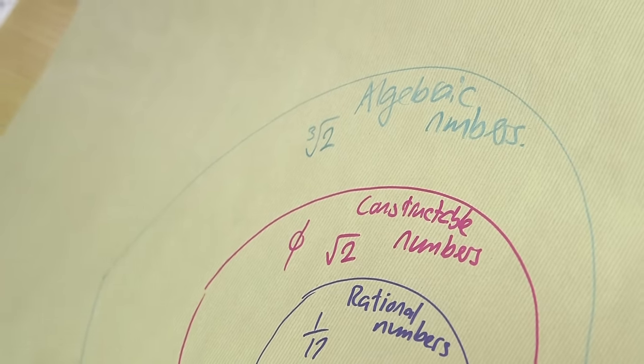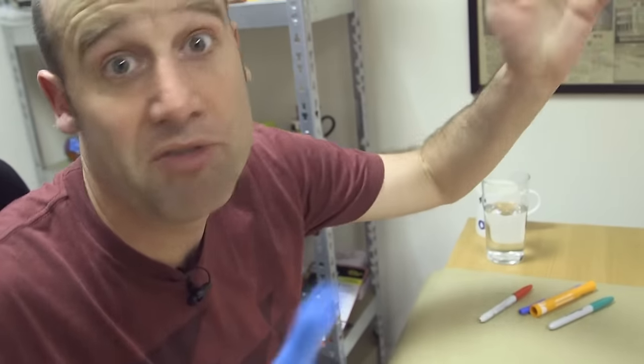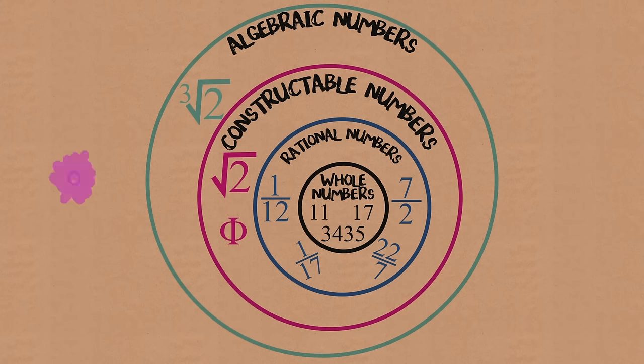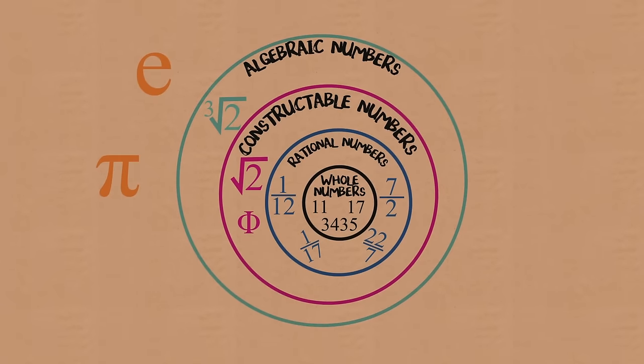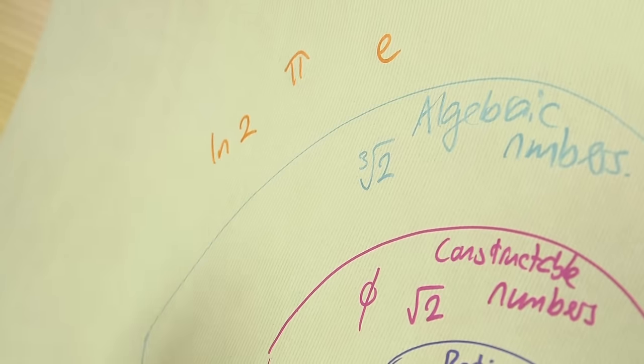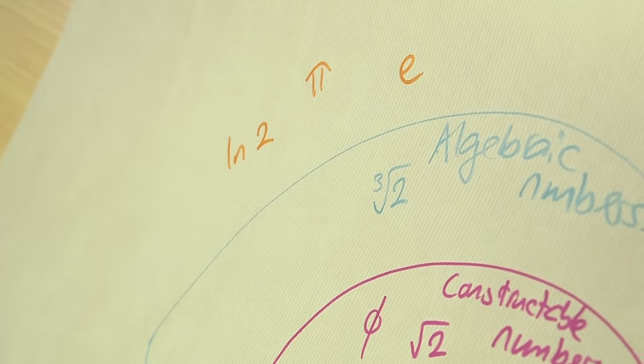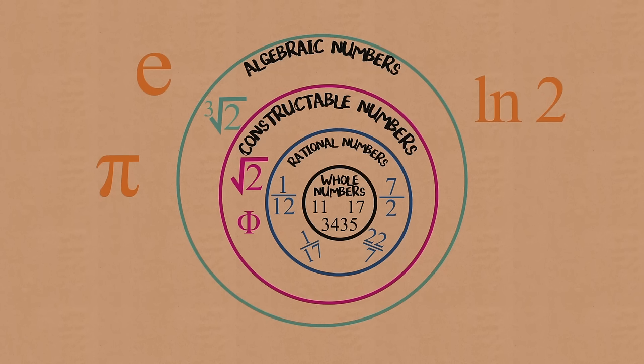And then outside algebraic, you've got beyond that. So you've got things like pi. Pi lives out here, pi is transcendental, e is transcendental, the natural log of 2, that's out there. Things that aren't a nice neat solution to an algebraic equation. This is how people tend to categorize all the numbers.